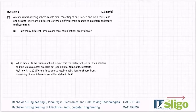A restaurant is offering a three course meal consisting of one starter, one main course, and one dessert. There are four different starters, six different main courses, and eight different desserts to choose from. How many different three course meal combinations are available?